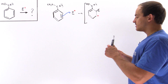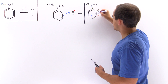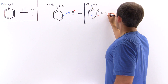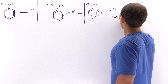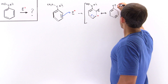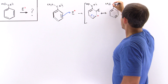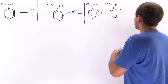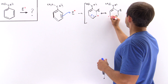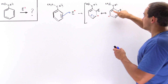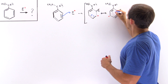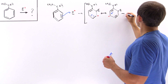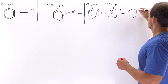The next resonance-stabilized structure has this pi bond jumping over, delocalizing the positive charge and placing it onto the fifth carbon. Then, if this pi bond jumps further, the charge is delocalized onto the tertiary carbon adjacent to the substituent group. So we have three resonance structures with the positive charge ending up on different carbons.